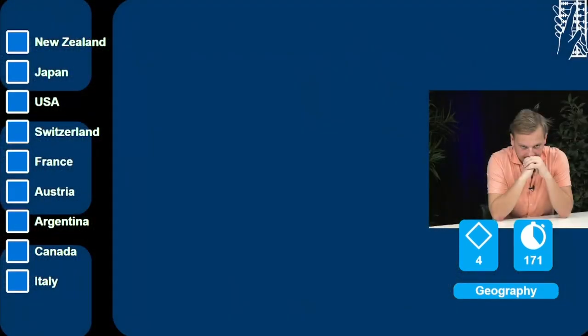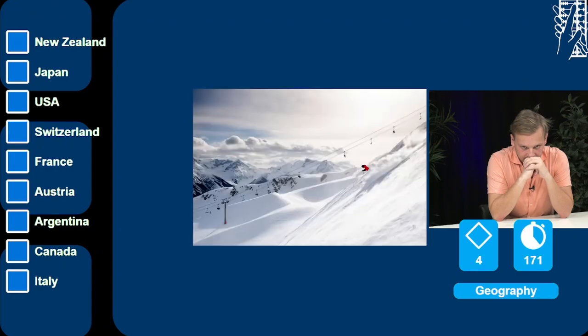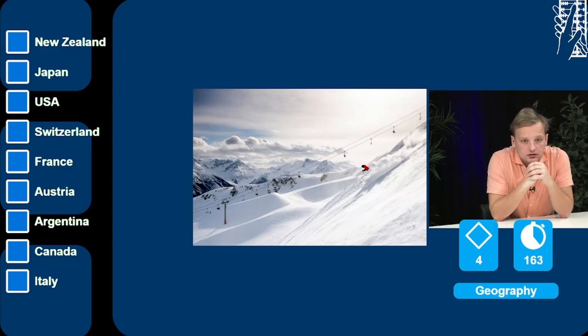I'm not much of a skier myself, but we'll see how it goes. Maybe it's a geography question, so maybe you can name the location. Shall we get started? Okay, first we have the Whistler Blackcomb, the largest of its continent. The Winter Olympics were held here in 2010. I think that is Canada.